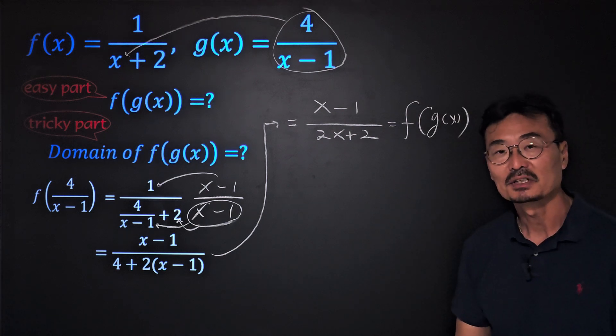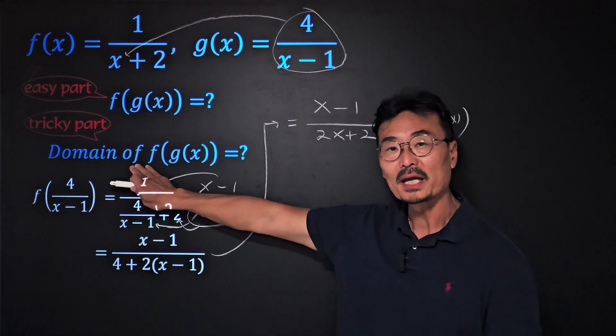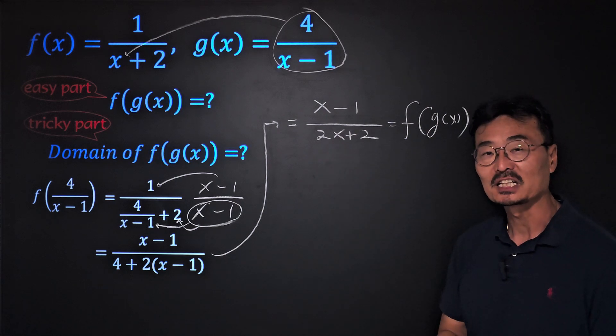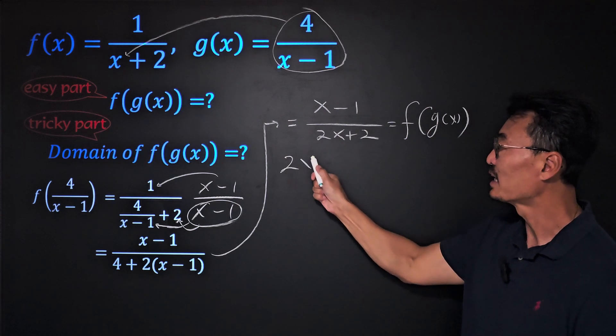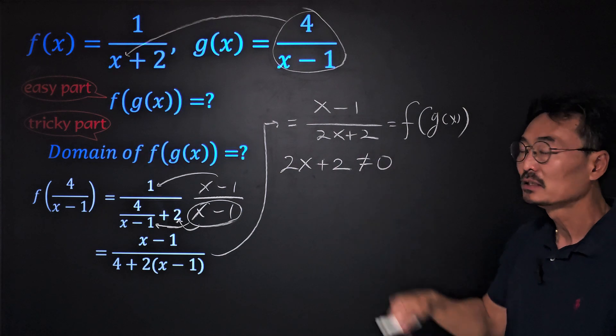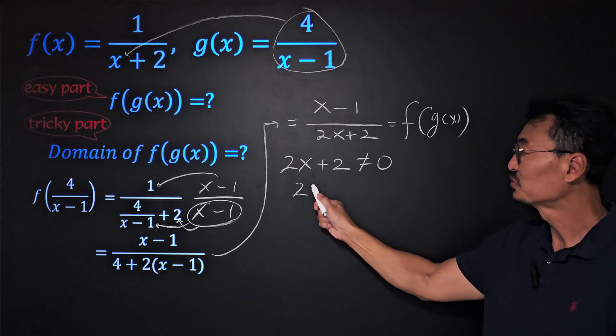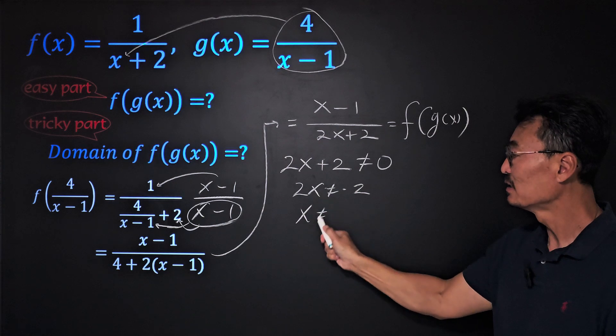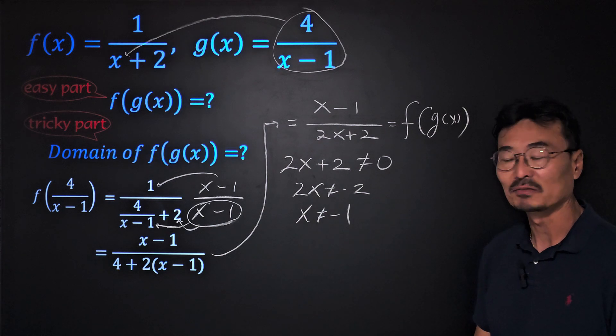Then what about the domain of f(g(x))? Since the denominator of a function cannot be 0, we'll take that denominator or the 4 + 2(x-1) and set it not equal to 0, where we have 2x is not equal to -2, or x is not equal to -1.